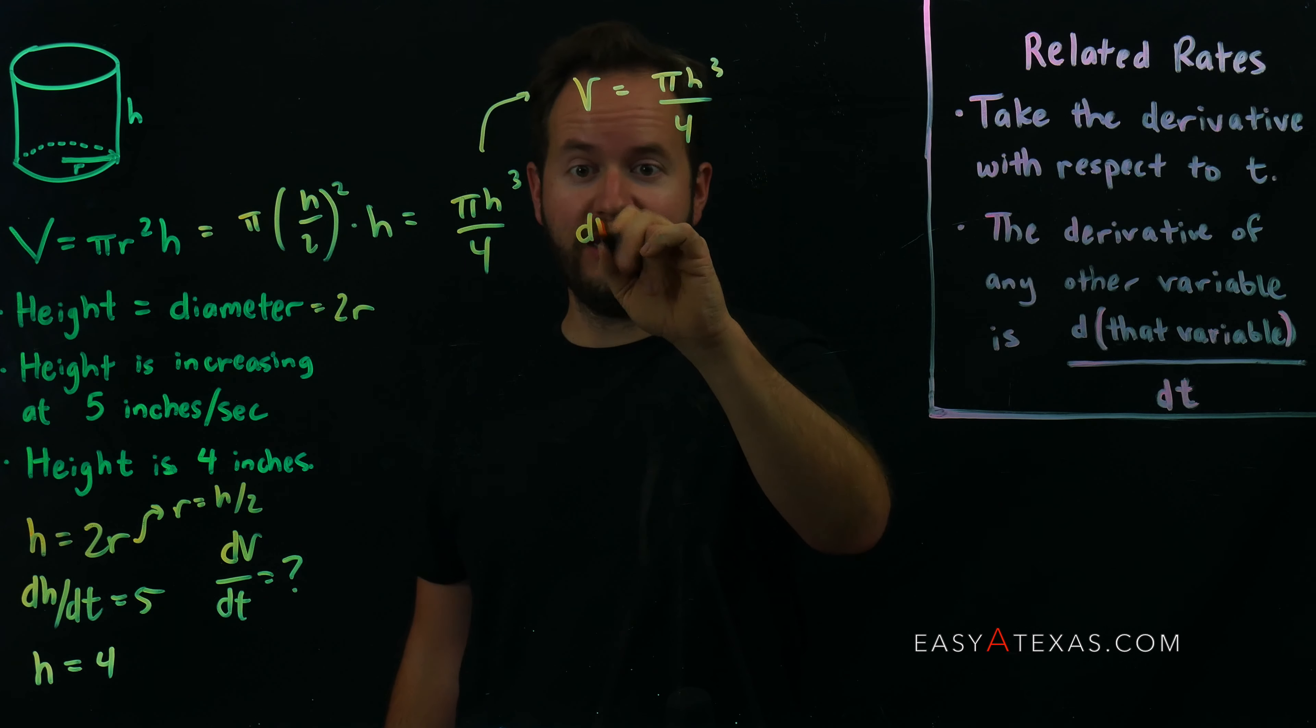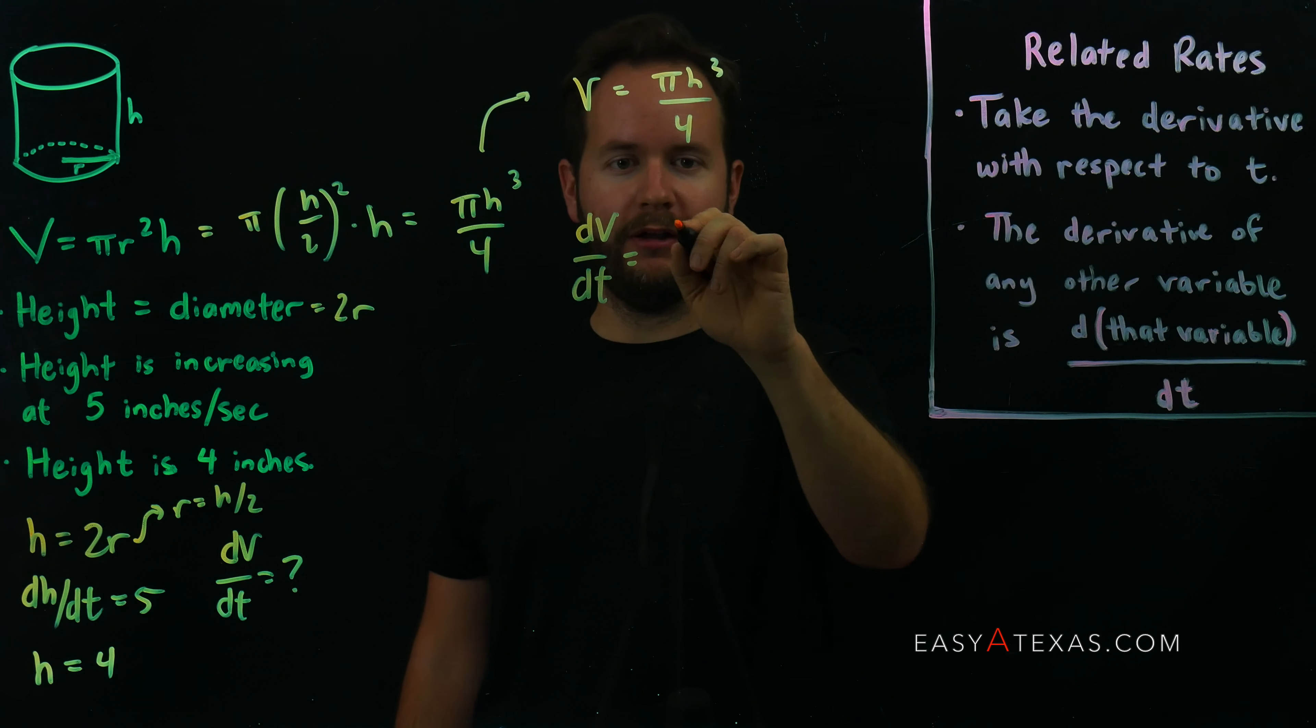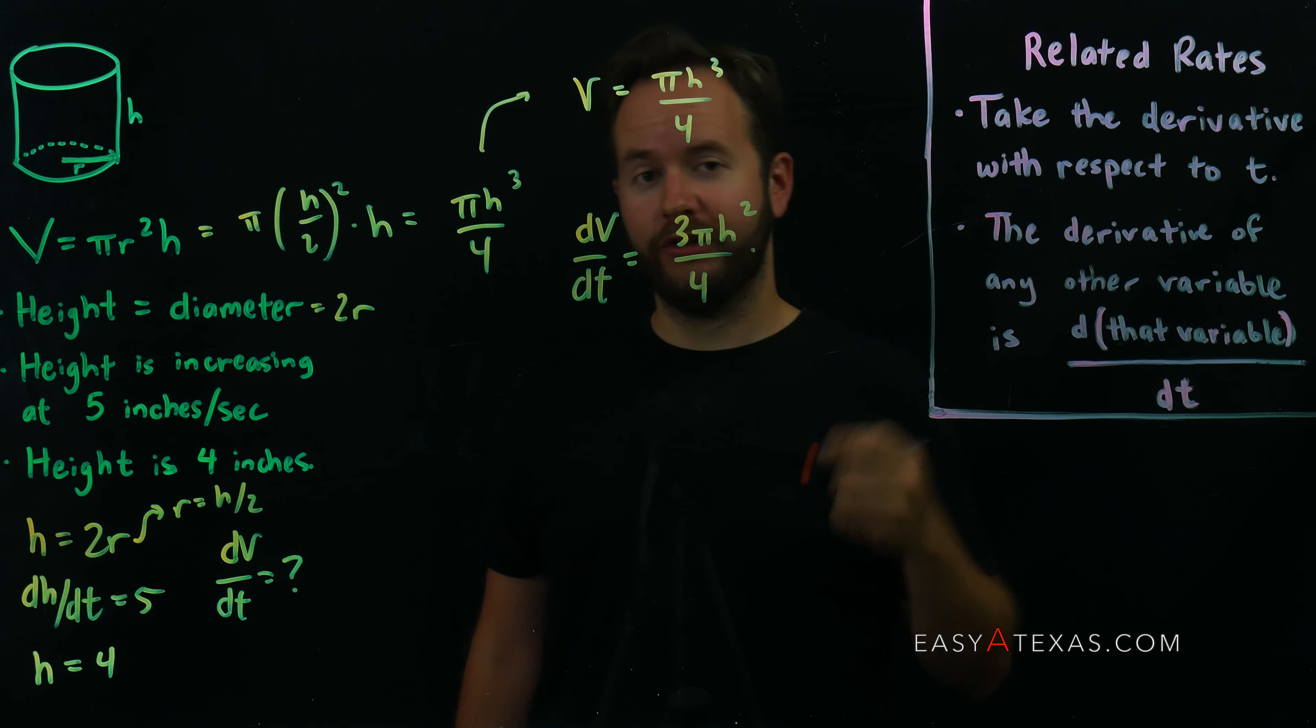Derivative of V would just be dv/dt. The derivative of pi h cubed over 4: the 3 will come down in front, 3 pi h squared over 4. And then we say, because we took the derivative with respect to time using this rule here, we tack on a dh/dt.